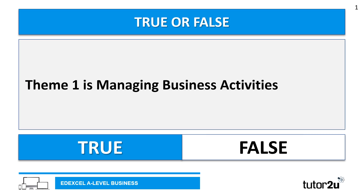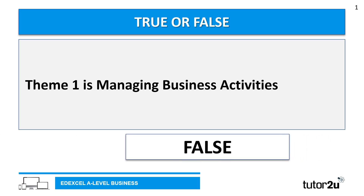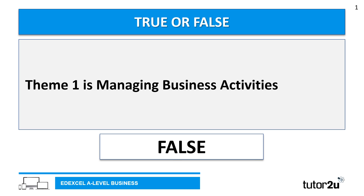Let's end with a little true or false activity that ties together what we've covered in this video. True or false: theme one is called Managing Business Activities — is that true or is that false? Well, that is false. Theme one is called Marketing and People. Theme two is Managing Business Activities.